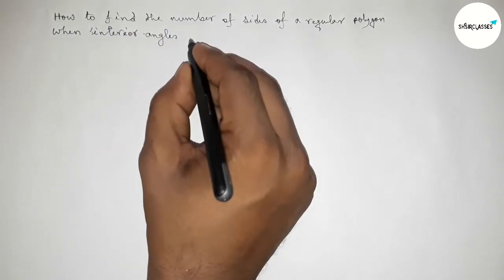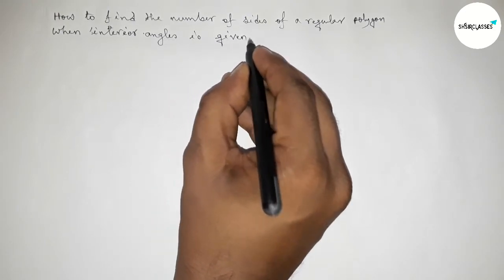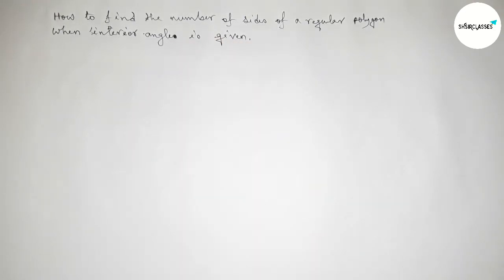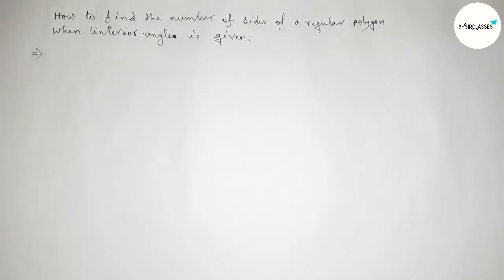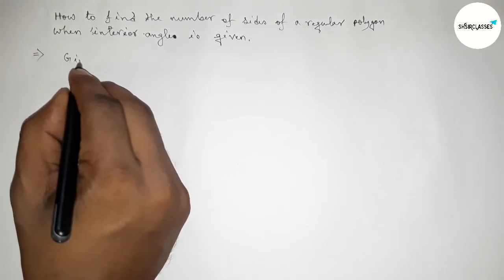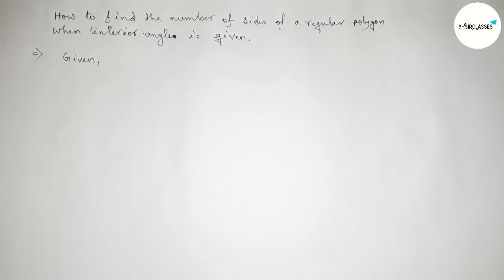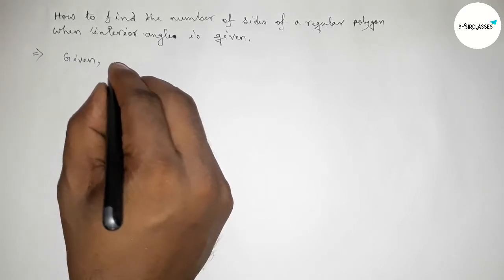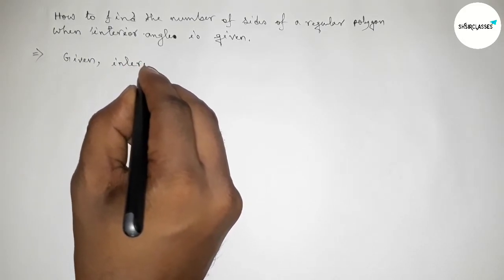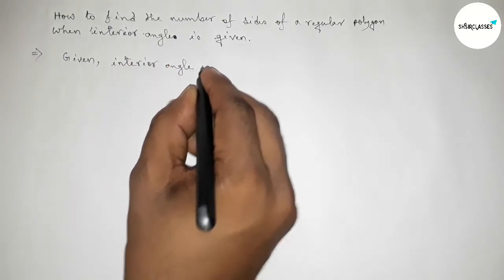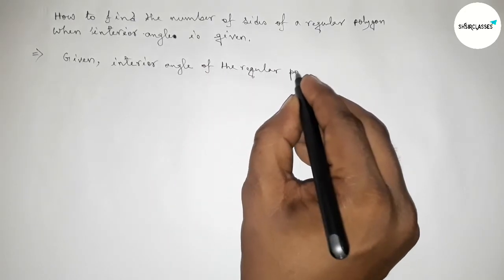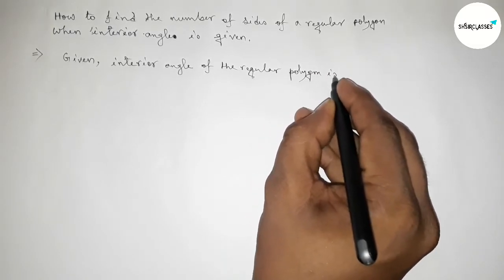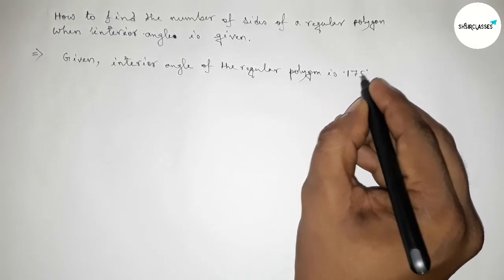Let's start the video. First of all, let's solve this problem here. Given the interior angle, I'm going to take the interior angle of this regular polygon equals to 175 degrees. You can take another value like 120, 130, etc.